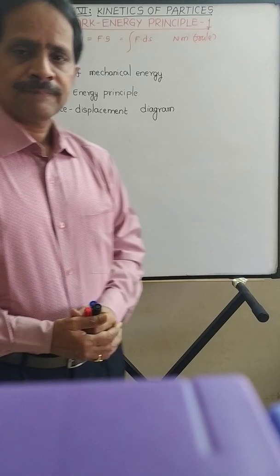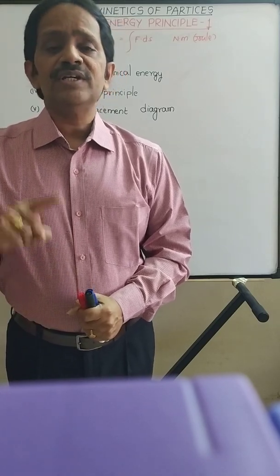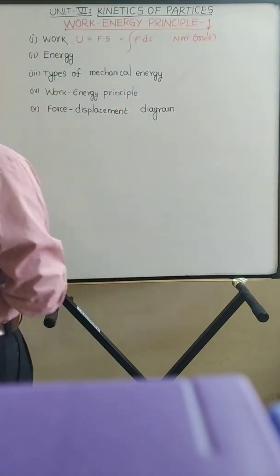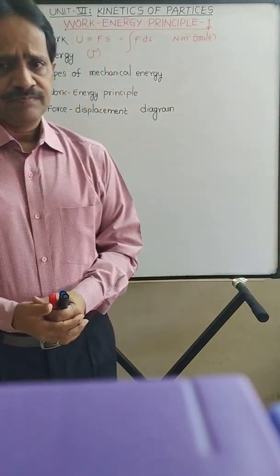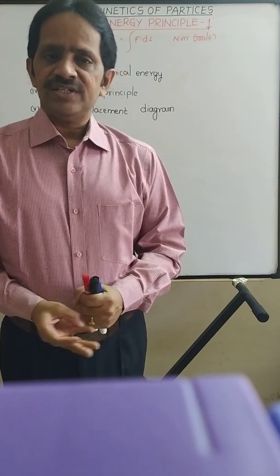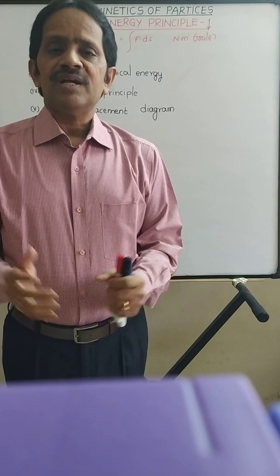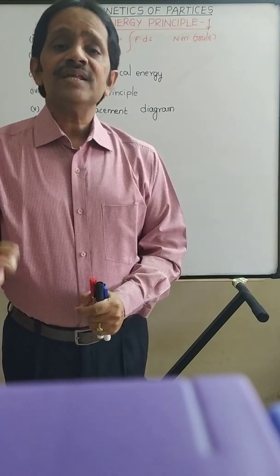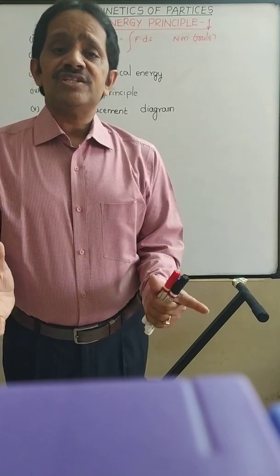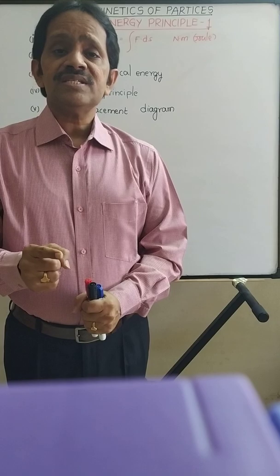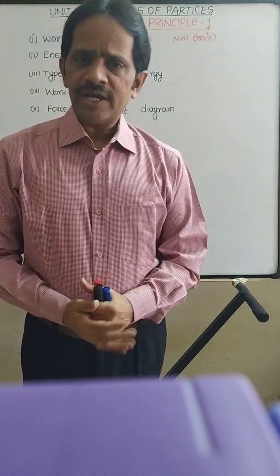Energy is nothing but the capacity to do work. The unit of energy and the unit of work done are both the same — energy is also measured in joules. There are different types of energies such as light energy, sound energy, electrical energy, magnetic energy, mechanical energy, and so on. But in engineering mechanics we consider only mechanical energy. Mechanical energy is the energy possessed by a body when it has the ability to do work because of its position or motion. There are two types of mechanical energy.